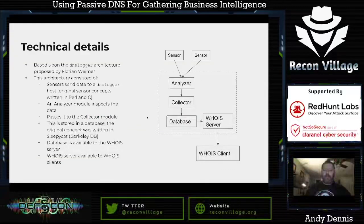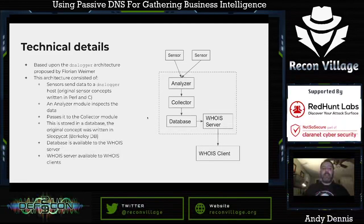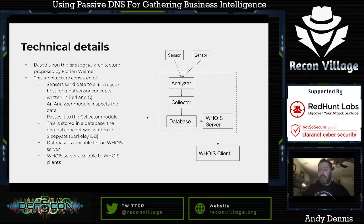Passive DNS is based on the DNS logger architecture proposed by Florian Weimer. This architecture consists of sensors which send data to the DNS logger host — the original sensor concepts were written in Perl. There's an analyzer module which inspects the data, and a collector module which collects it and stores it within the database. The original was written in Sleepy Cat, which is a Berkeley DB. There's also a whois server connected to the database, so whois clients can query the server to gather information of interest. It's quite a simple mechanism on the surface.